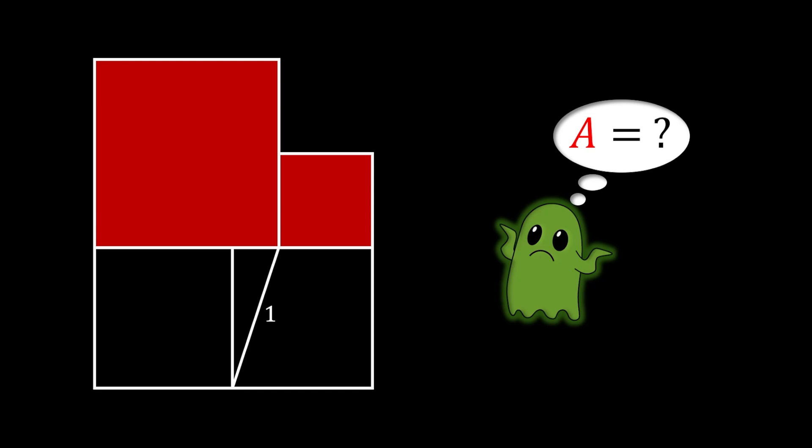Alright, so let's solve this one. First, let us notice the only right triangle in the sketch with the hypotenuse of 1. We will label the longer vertical leg of this right triangle as x and the shorter horizontal leg as y.